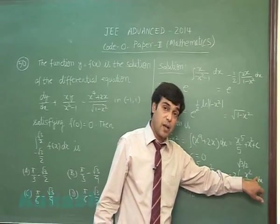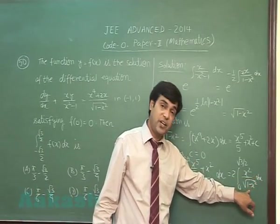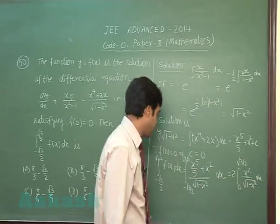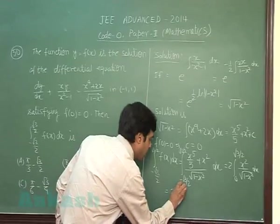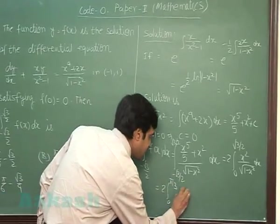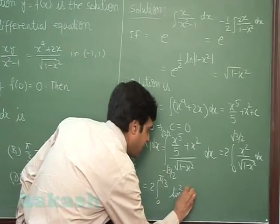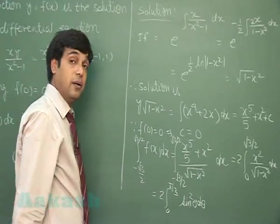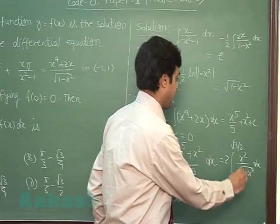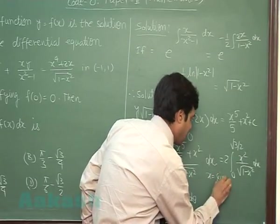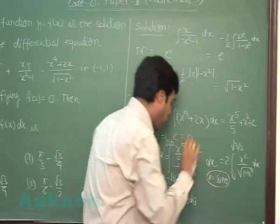By substituting x equals sin θ, dx becomes cos θ dθ. Denominator is cos θ. Cancelled out. This can be written twice 0 to π/3 sin² θ dθ. With substitution x equals sin θ. Fine?